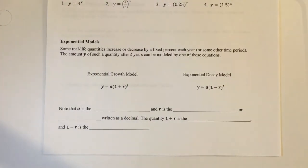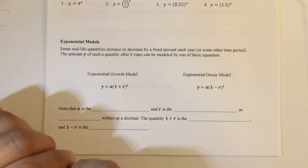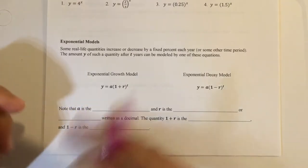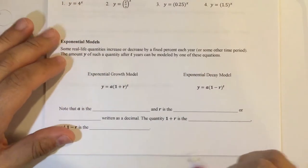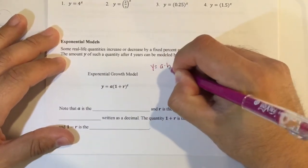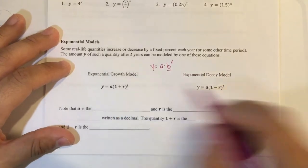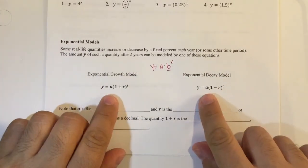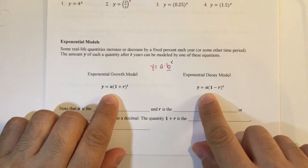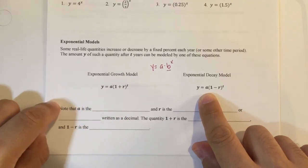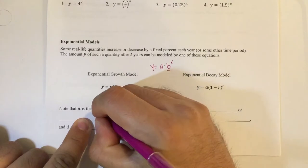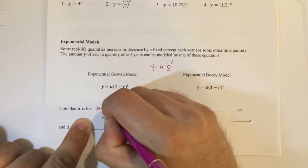Alright, for this one here, exponential models. It says some real life quantities increase or decrease by a fixed percent each year or some other time period. The amount y of such a quantity after t years can be modeled by one of these equations. So they are both actually in the same form, y equals a times b raised to the x power. But you notice that b is taken over by 1 plus r and 1 minus r. So a is still going to be my initial value. So note that a is the initial amount.